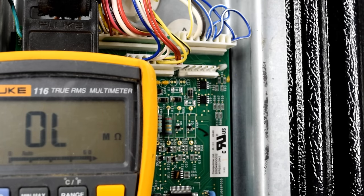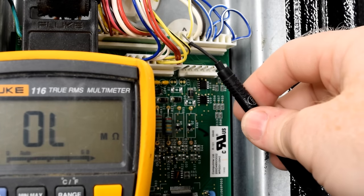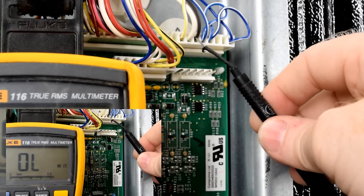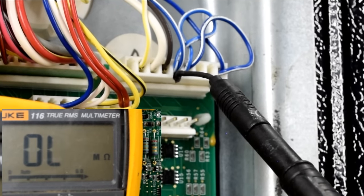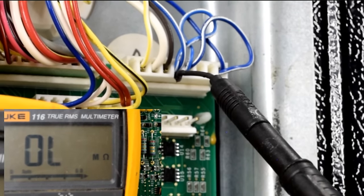So how this test is done, take your black lead and count from the left. One, two, three, four, five. Should have a blue wire with a white stripe through it. And that's where your black lead will go.